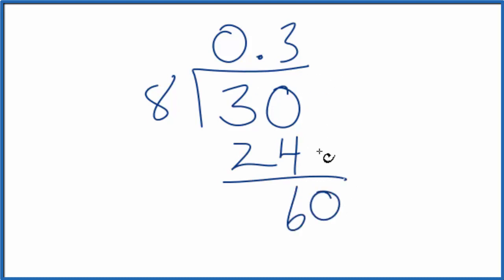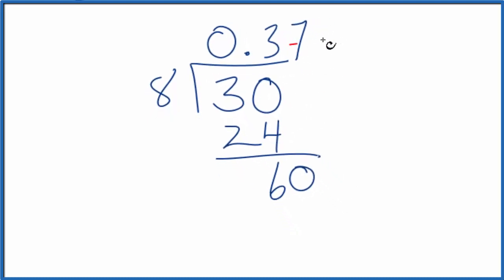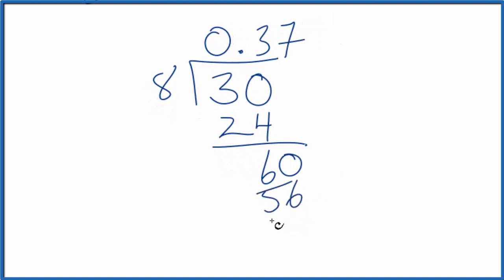Move over a decimal point. 8 times 7, that's 56. We subtract, we get 4. Move over a decimal point, call this 40, and 8 times 5 gives us 40.